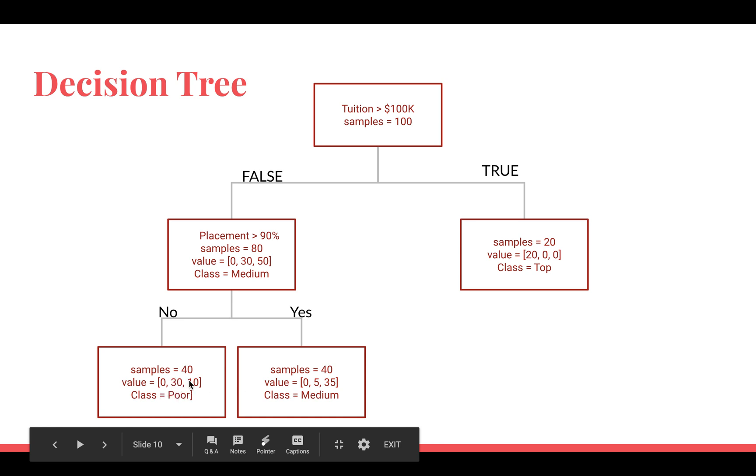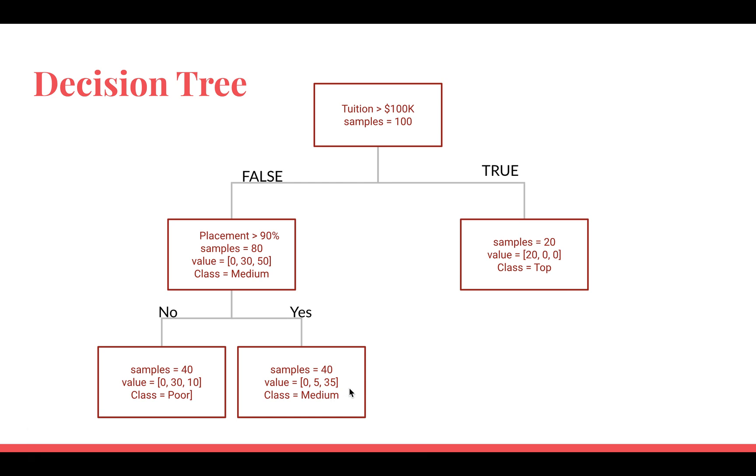Even though we classify this as poor because the poor rated universities are more here, there are still 10 medium rated over here. And here even though there are 35 medium rated, there are still 5 poor rated. So these are impure nodes.